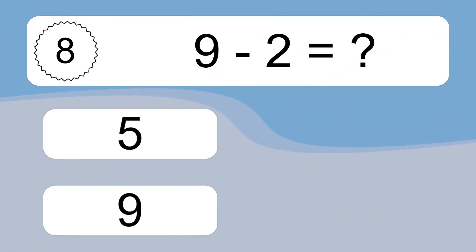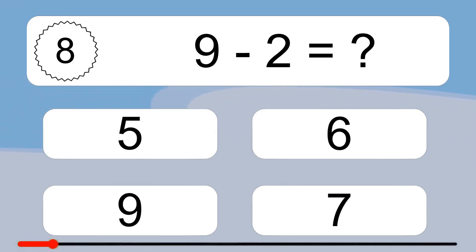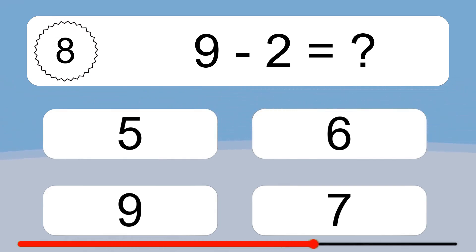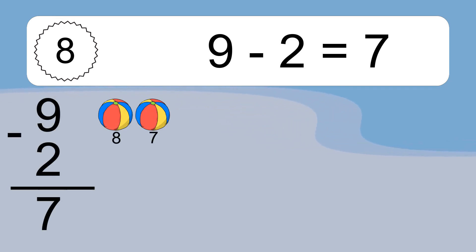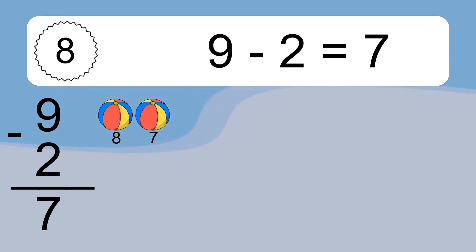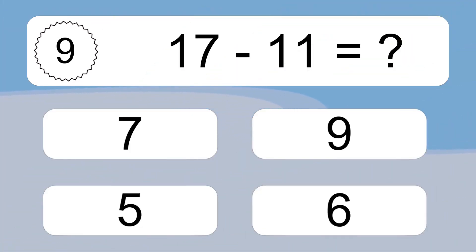9 minus 2 equals what? 9 minus 2 equals 7. Let's count it: 8, 7. 17 minus 11 equals what?